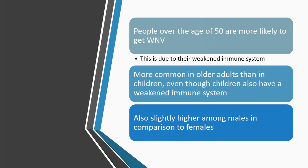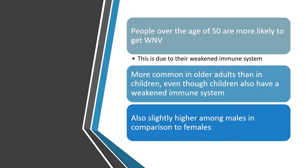People over the age of 50 are more likely to get the virus due to their weakened immune system. It is more common in older adults than in children, even though children also have a weakened immune system. It is also slightly more common among males in comparison to females.